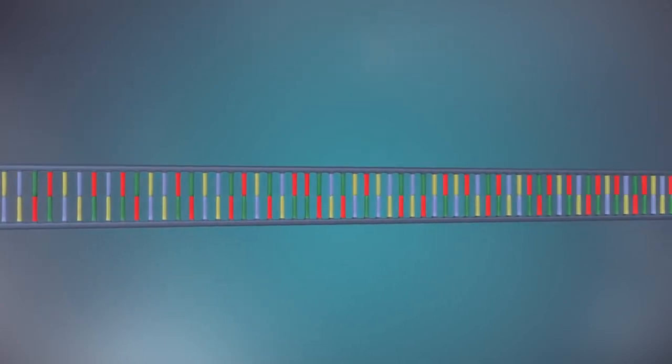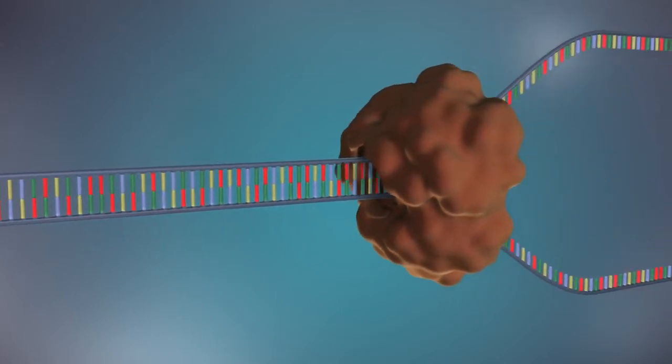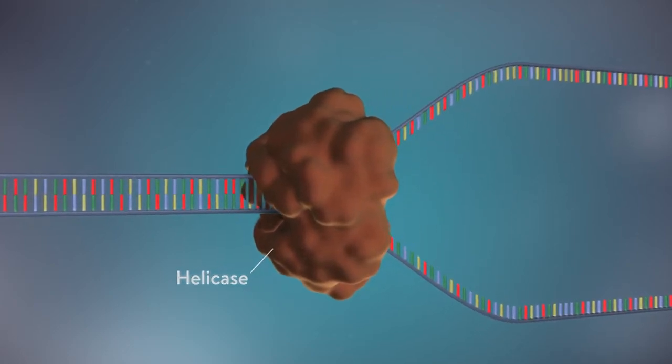The first step in DNA replication is to separate the two strands. This unzipping is done by an enzyme called helicase and results in the formation of a replication fork.